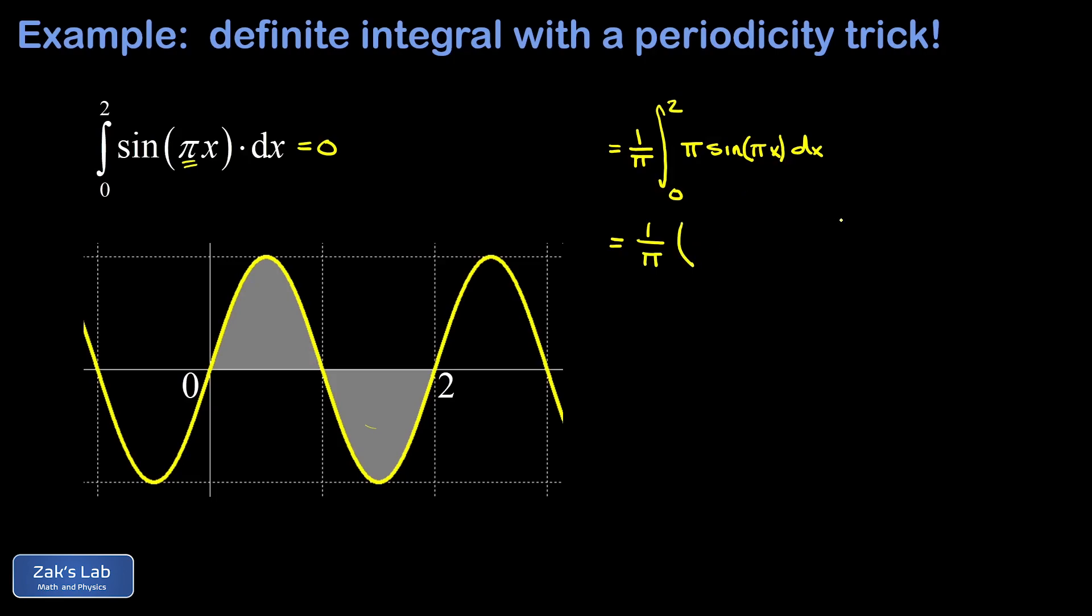Now, the thing I differentiate to get pi sine pi x is going to be a negative cosine pi x. The minus sign is there because the derivative of cosine, if I go the other way around now, the derivative of cosine produces a minus sign. And then I can see by thinking about the derivative of this cosine pi x, that the chain rule would produce the factor of pi that I put into the integrand.